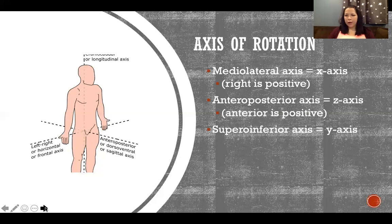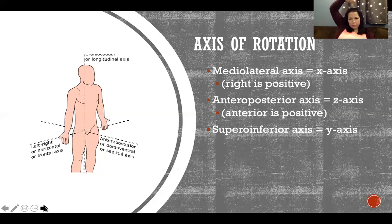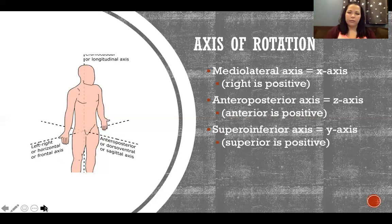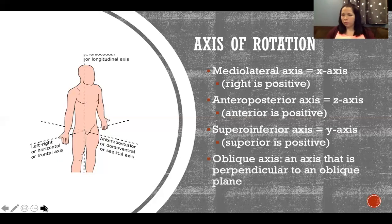The superior-inferior axis is our last one — the y-axis going straight up and down through the top of the body. Superior is positive, inferior is negative. An oblique axis is any axis of rotation that falls outside of our three cardinal axes.